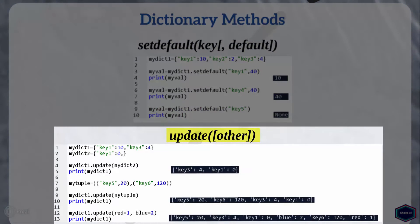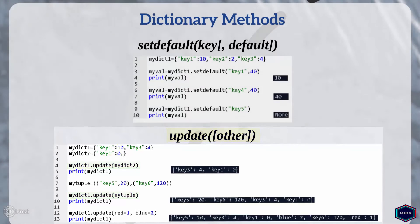The update method updates a dictionary. It takes either another dictionary object or an iterable of key-value pairs such as a tuple. If a key already exists in the dictionary, update method overwrites its value. I hope you now have a basic understanding of all dictionary methods.